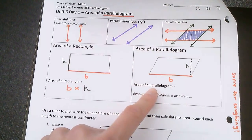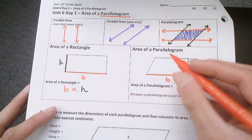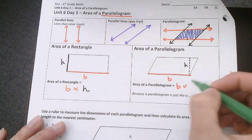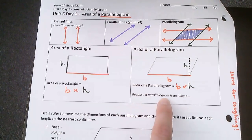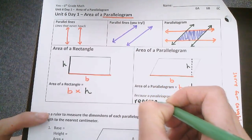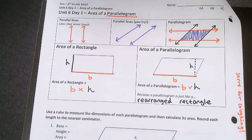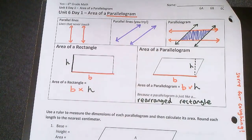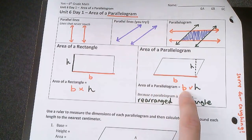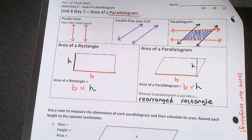So that means that the area of a parallelogram is the same as finding the area for a rectangle. So the area of the parallelogram is just the base times the height. Because a parallelogram is just like a rearranged rectangle. So we know that the area is the base times the height, which is the line that goes from the top to the bottom. Let's put this in action.